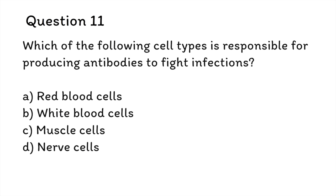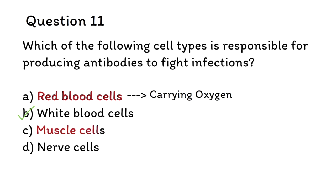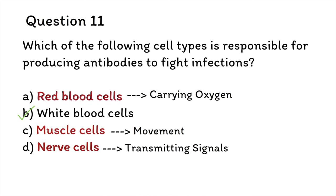Question 11: Which of the following cell types is responsible for producing antibodies to fight infections? A. Red blood cells, B. White blood cells, C. Muscle cells, D. Nerve cells. The correct answer is B, white blood cells. White blood cells, also known as leukocytes, are responsible for producing antibodies to fight infections. Antibodies are proteins that recognize and bind to foreign substances, such as viruses or bacteria, and mark them for destruction by other cells of the immune system. Red blood cells do not have a nucleus and are not involved in immune responses — they carry oxygen from the lungs to the body's tissues. Muscle cells are involved in movement, and nerve cells transmit signals throughout the body; neither produces antibodies.